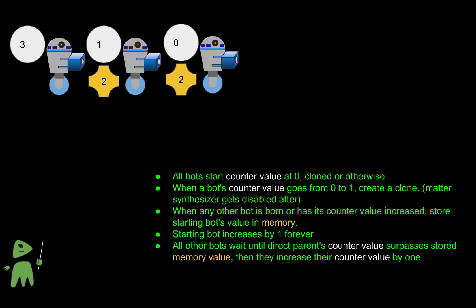Starting bot updates, and bot two can proceed. Bot two updates. Bot three has to wait since the value incrementer of bot two has not surpassed what's in its memory yet. Bot one updates. Bot two can update again, and finally, bot three updates, and since it went from zero to one, it can make its clone.